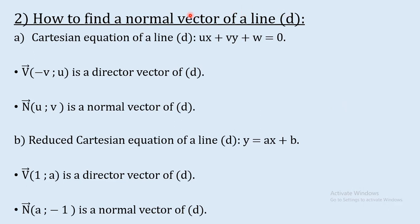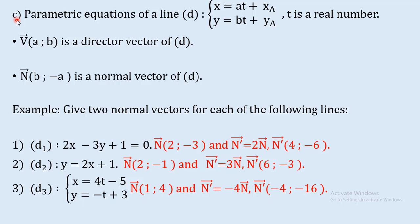How to find a normal vector of a line: if the line is given in its Cartesian form, then v(-u, v) is a director vector, and n(u, v) is a normal vector of d. If given in its reduced Cartesian form, v(1, a) is a director vector and n(a, -1) is a normal vector. If the line is given in its parametric form, v(a, b) is a director vector and n(b, -a) is a normal vector of d.